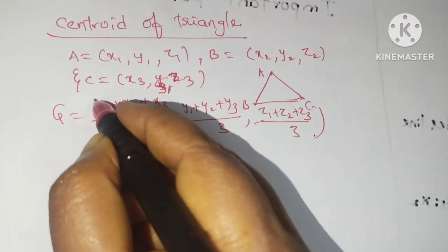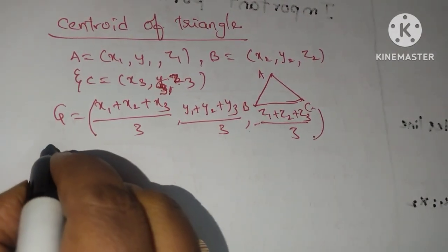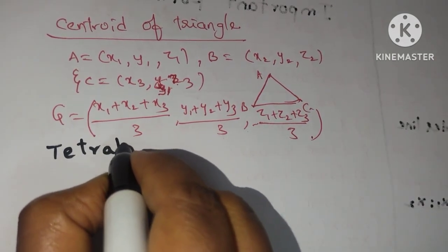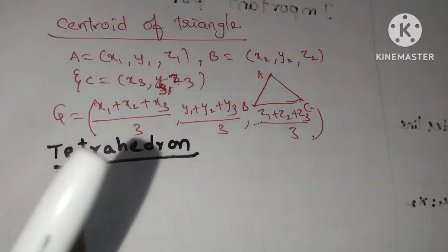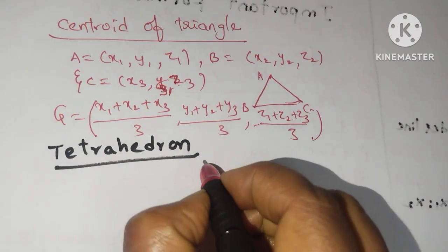Suppose they are asking centroid for tetrahedron. I want centroid for this tetrahedron. For this, I will take four points.